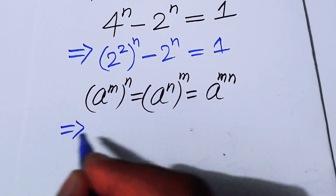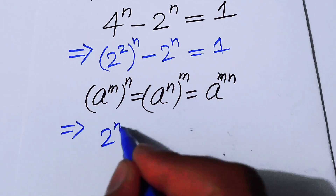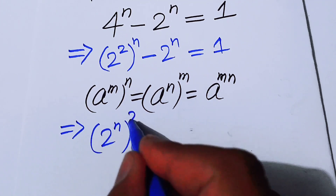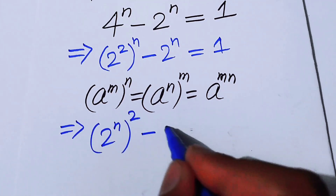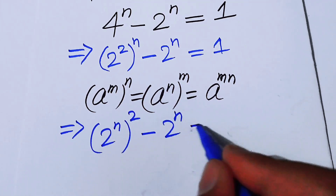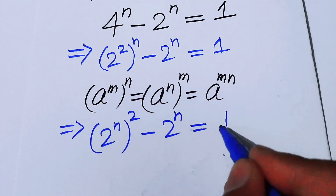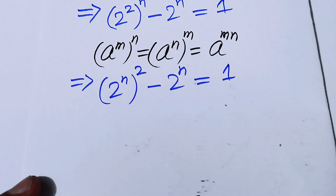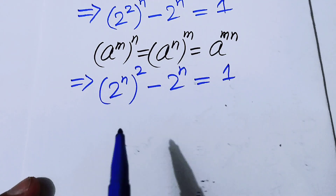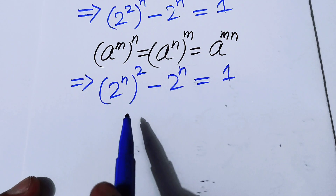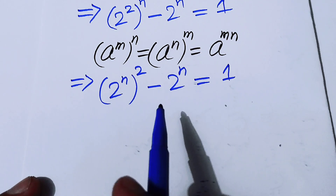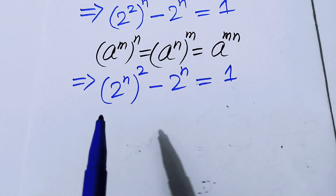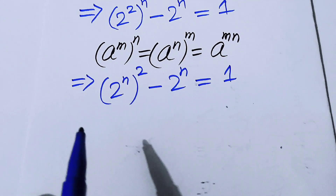According to this law, we interchange the two exponents and get 2 to the power of n, whole squared, minus 2 to the power of n, is equal to 1. After that I can change this exponential equation into quadratic form.